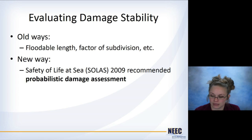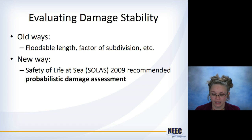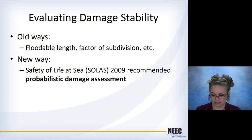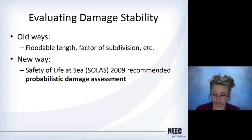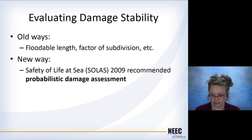This calculation using floodable length also involves a factor of subdivision, which acts like a safety factor. It's an older method, but still valid and not a bad way of checking things. However, it can't capture many things we know happen on ships. The newer approach is probabilistic damage assessment, which is more involved and will be covered in the next video. The floodable length gives a good basis for understanding how flooding works and how to contain it, and it's a good starting point because it's relatively simple — you can write up a spreadsheet for it — before moving on to probabilistic damage assessment.